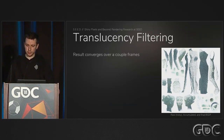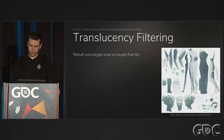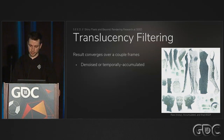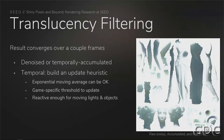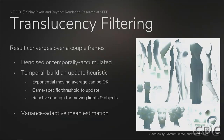We filter the results as they converge over multiple frames. You can denoise them or temporally accumulate them. If you do temporal accumulation, you have to build a heuristic that works for your case — it has to be reactive enough for moving lights and objects that could potentially occlude each other. In our case, we have a variance adaptive mean estimator that Thomas developed, which I'll talk about in a few slides when I discuss GI.